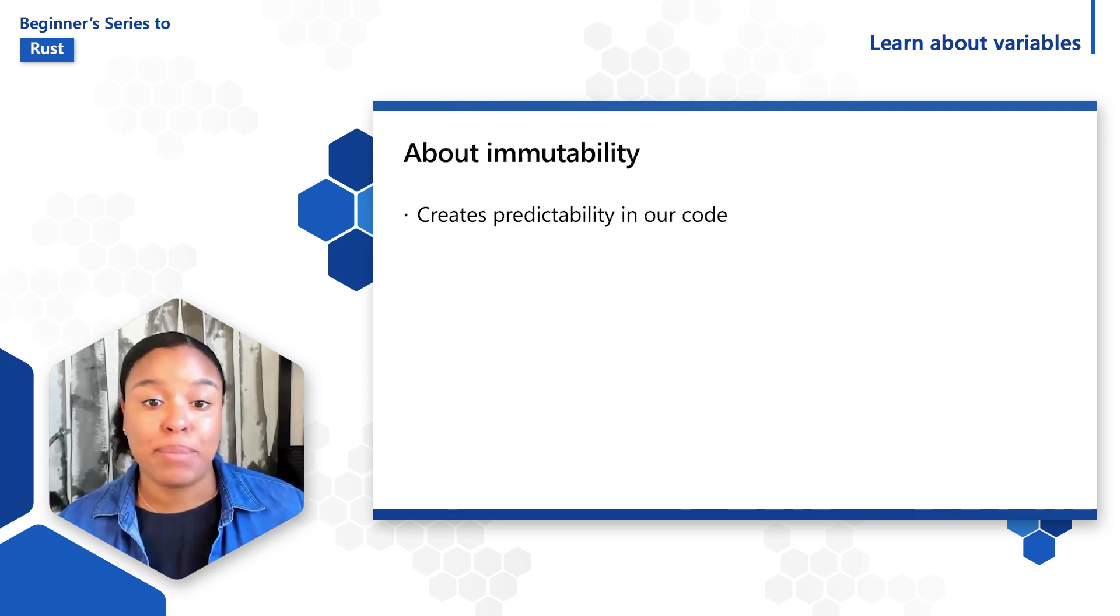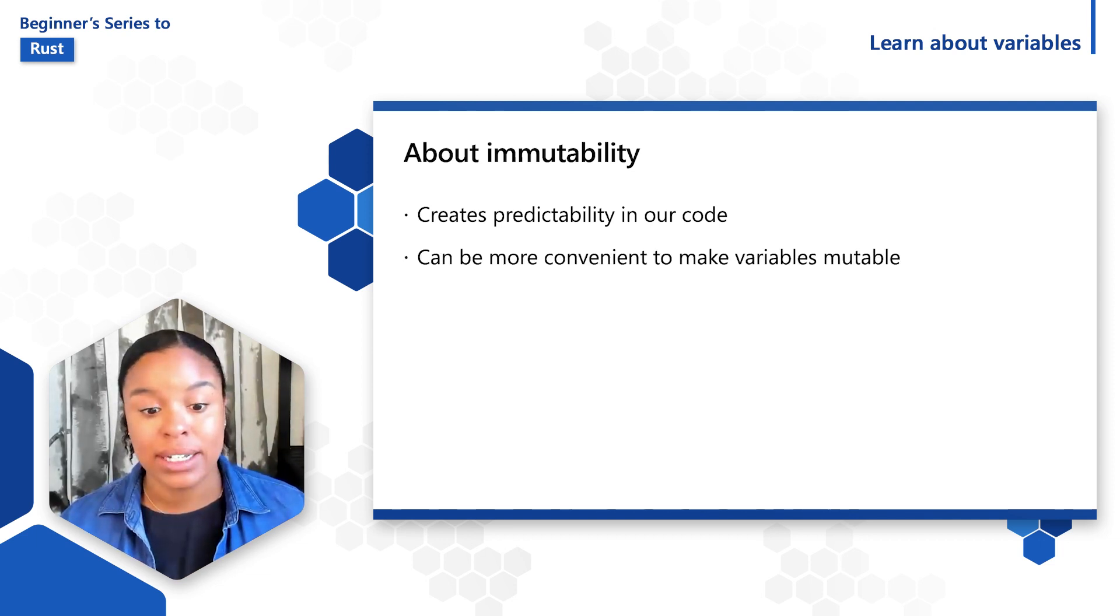Immutability creates predictability in our code. This means that we don't have to keep track of how and where a value will change. In some cases, you'll want to make variables mutable because the code will be more convenient to write, especially if you expect to reuse the same variable with changing values.